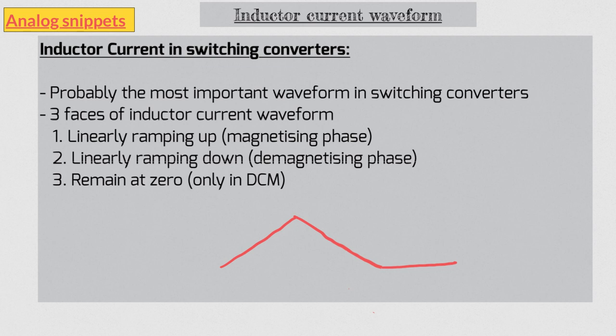The ramping up phase is also known as the magnetizing phase, because in this phase the inductor is storing energy. The ramping down phase is also known as the demagnetizing phase, and in this phase the inductor delivers energy. In standard convention, the voltage across the inductor is positive during the ramping up phase, negative during the ramping down phase, and zero during the third phase.